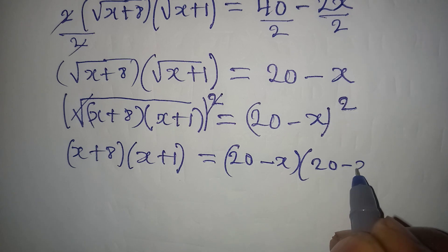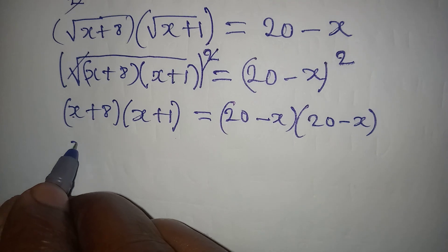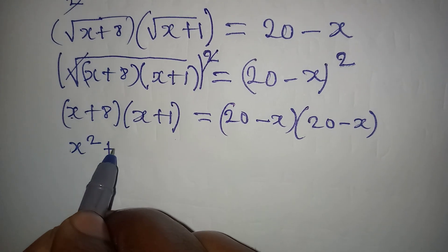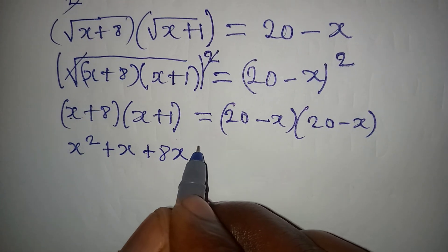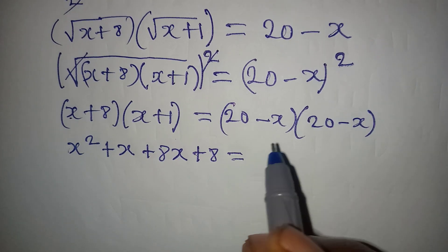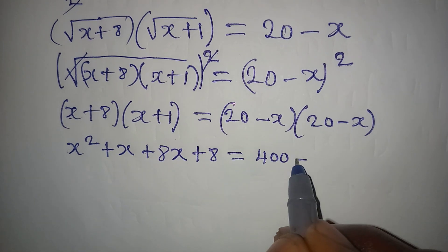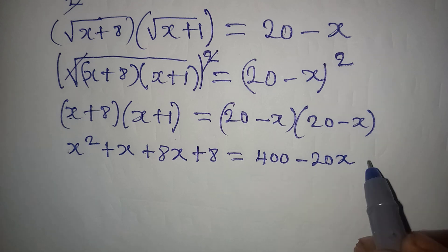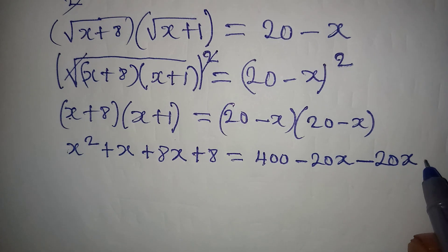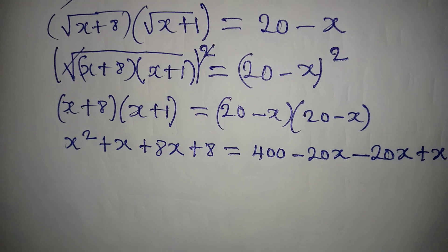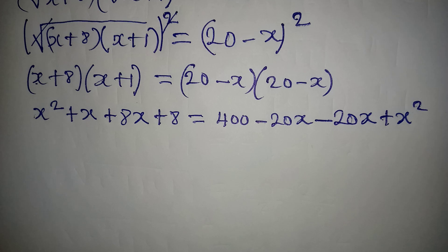Expanding the left side: x times x is x squared, x times 1 is plus x, 8 times x is plus 8x, and 8 times 1 is plus 8. On the right side: 20 times 20 is 400, 20 times negative x is minus 20x, negative x times 20 is minus 20x, and negative x times negative x is plus x squared.